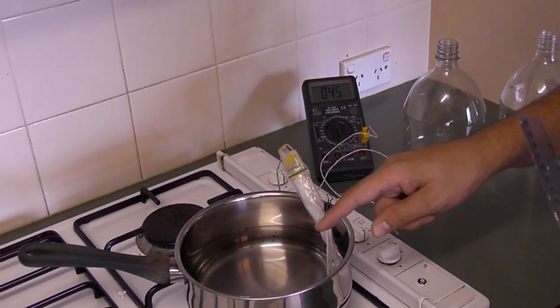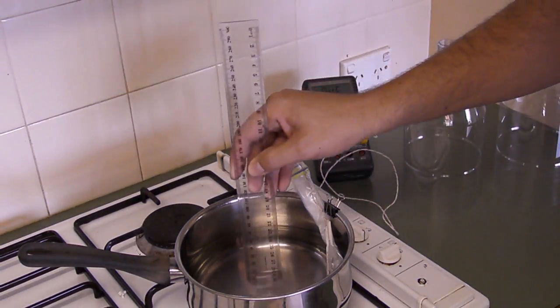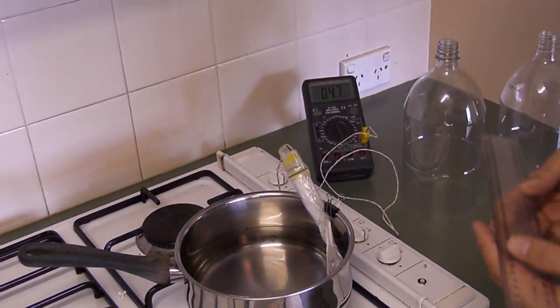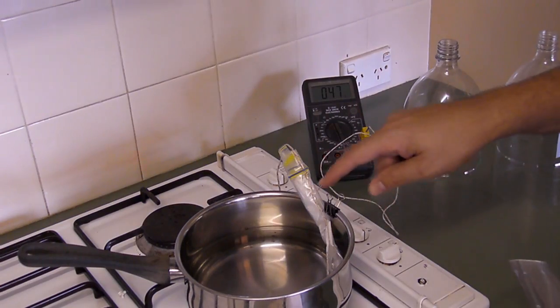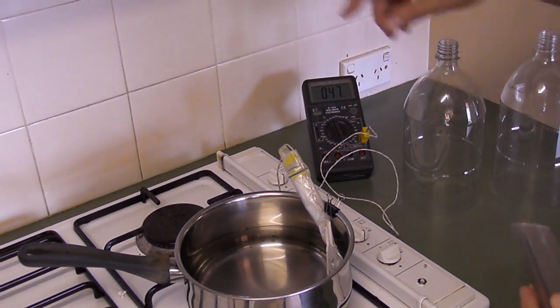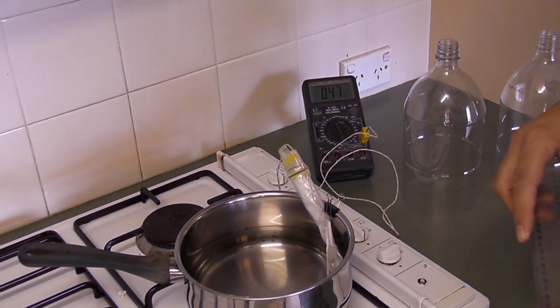Get yourself a flat bottom saucepan and fill it about three centimeters full of water and then heat it up to about 72 degrees Celsius. I've got a thermocouple set up here with the thermometer to tell me how hot it is.